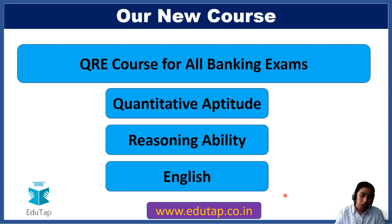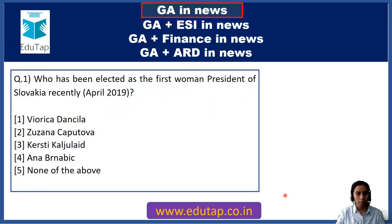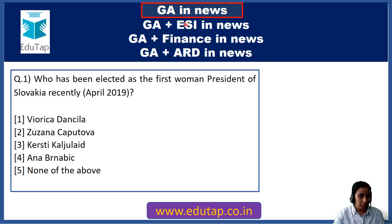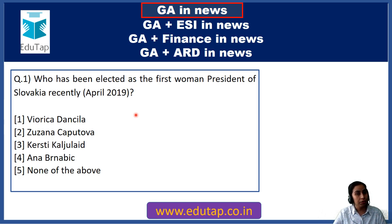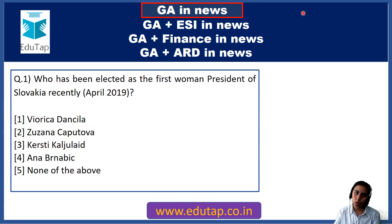Now let us move to the lecture of the day. We will be discussing each question and then moving to the solution. The label GA in News on a question means it is important for Phase 1 only. So GA in News is synonymous with Phase 1. We will cover these current affairs in the form of MCQs so that you are better prepared when you see such a question in your examination.